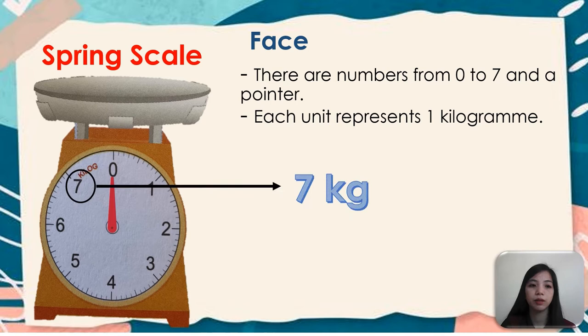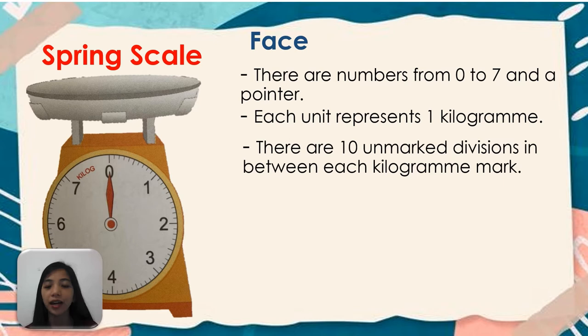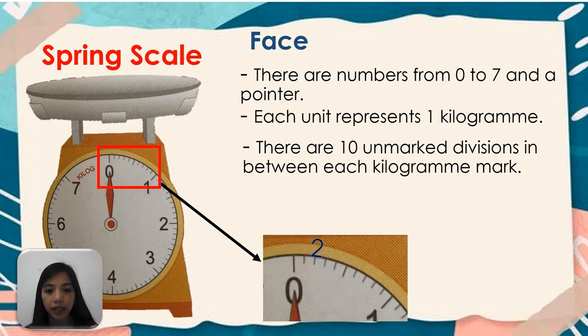Another description of the face: there are ten unmarked divisions in between each kilogram mark. So take a look at this. So we can count like 1st, 2nd, 3rd, 4th, 5th, 6th, 7th, 8th, 9th, and 10 divisions.